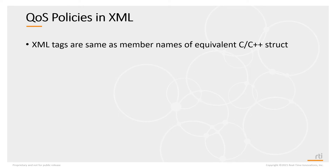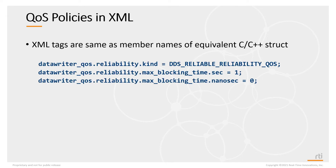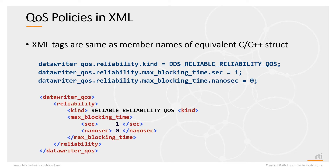How are QoS policies defined in XML? XML tags are exactly the same as the names of the members in the equivalent C or C++ structure. For example, in C or C++ you may have the data writer QoS structure, the reliability policy, and the kind parameter — accessed in code as dataWriterQoS.reliability.kind. You also have max_blocking_time seconds and nanoseconds. In XML, you have dataWriterQoS as a tag, reliability as a tag, kind as a tag, max_blocking_time as a tag, and seconds and nanoseconds as tags — in the same order, with exactly the same spelling.